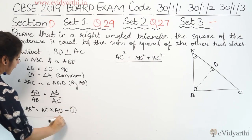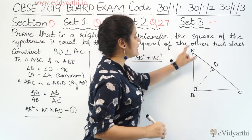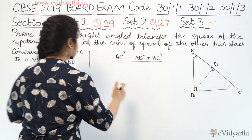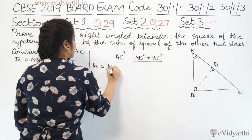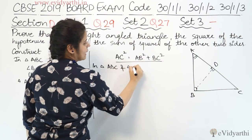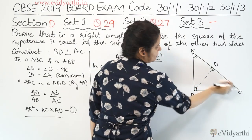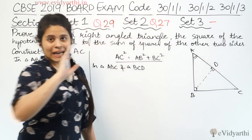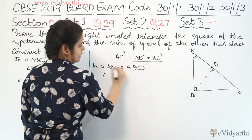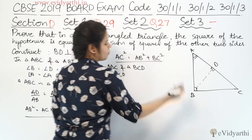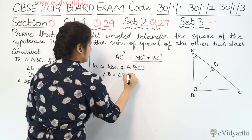अब आगे बढ़ते हैं — जैसे हमने इस वाले triangle को बड़े वाले triangle के similar prove किया है, इसी तरह से यह वाला triangle, means now we'll take triangle ABC (बड़ा वाला) and triangle BCD (यह वाला triangle). यह भी right-angle triangle है. Angle ABC = 90° और angle CDB = 90°, दोनों equal हैं.